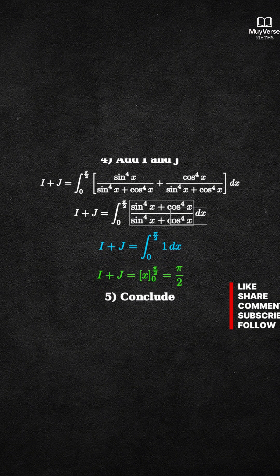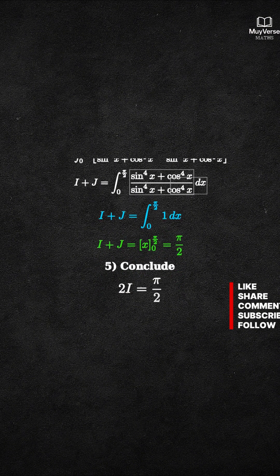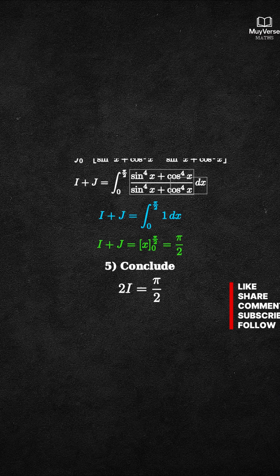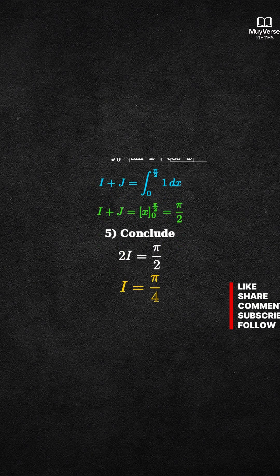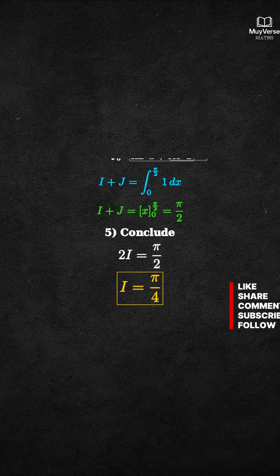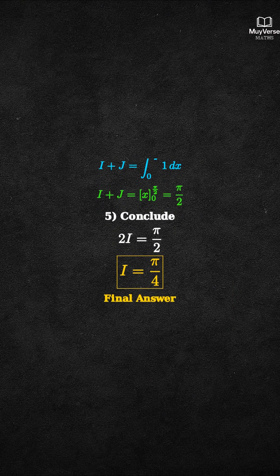Step 5: Use J equals I to finish. Since J equals I, we have 2I equals pi over 2. Divide both sides by 2. I equals pi over 4. That is the exact value of the original integral.